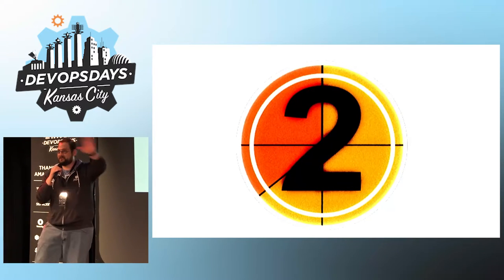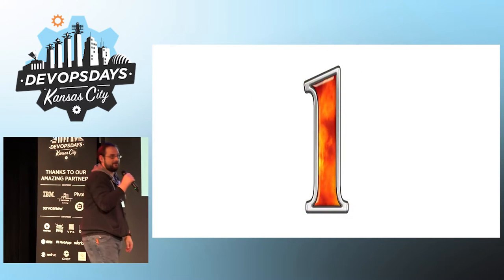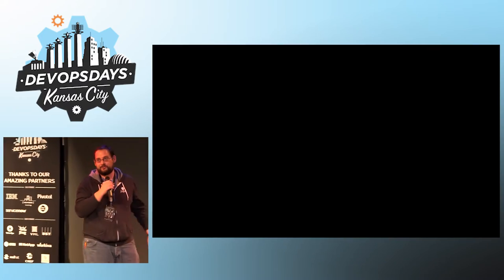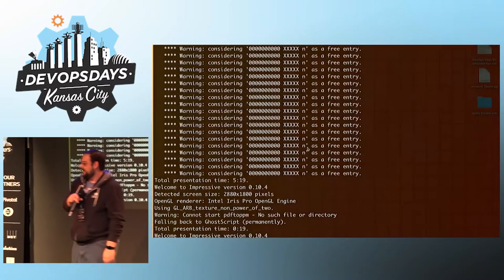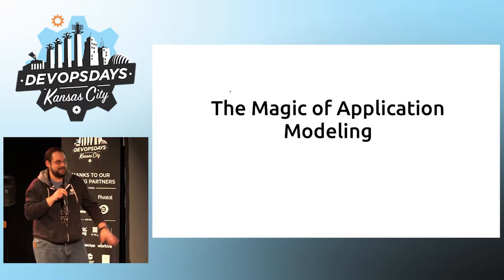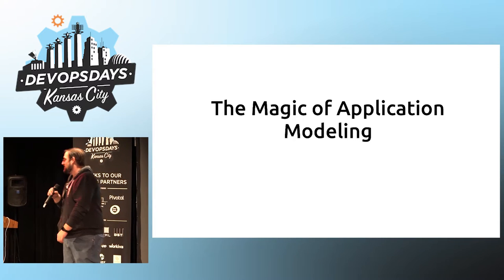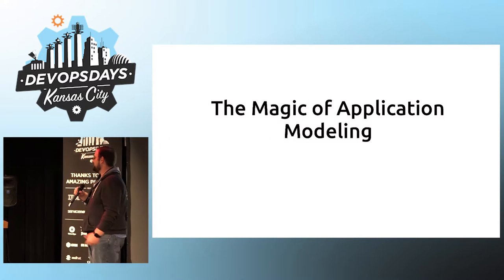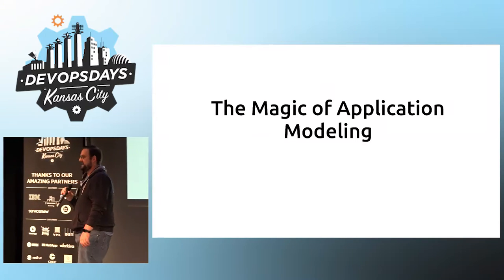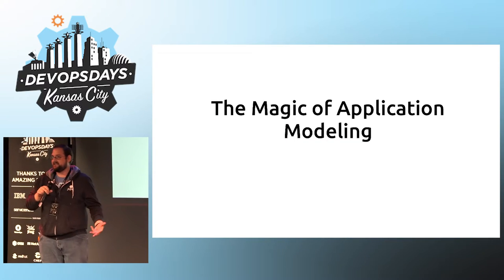For those of you that don't know, my name is Charles Butler. I work for Canonical, the people behind Ubuntu Linux, and I'm going to talk to you today about the magic of application modeling. This is going to mean something slightly different to everybody here in the room because this is not a tool talk — this is a principle talk. I'm going to be using some examples from my day job.